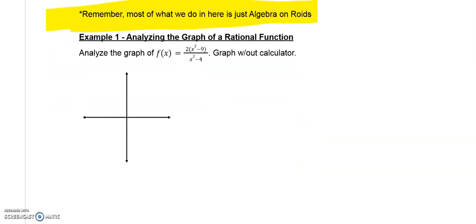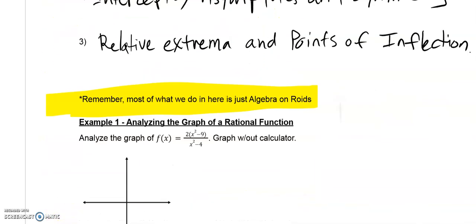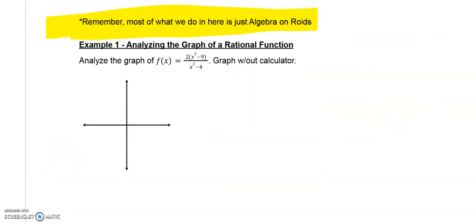Let's go ahead and look at an example. Use these principles right here, these skills, and go ahead and graph this function right here, two times the quantity of x-squared minus nine all over x-squared minus four. Do that without a calculator. Remember, it doesn't need to be perfect, but get a good idea of what that graph looks like. Pause the video, try this on your own, and then come back to see how you did.